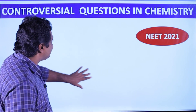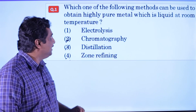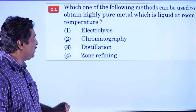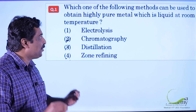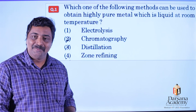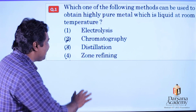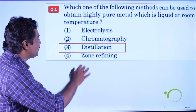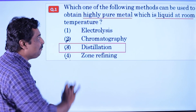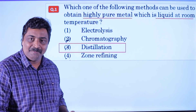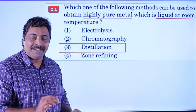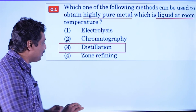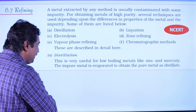The first question is from metallurgy. The question is: which one of the following methods can be used to obtain a highly pure metal which is liquid at room temperature? We need to identify the correct refining method. The answer is distillation.